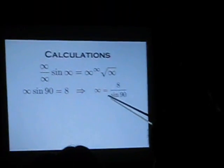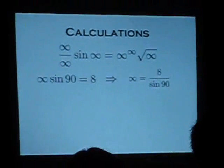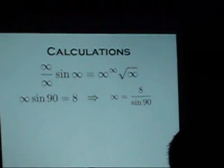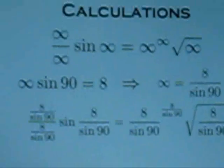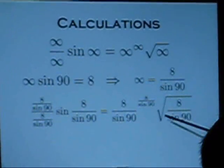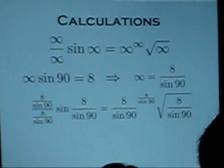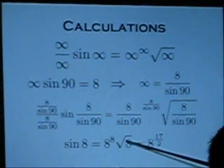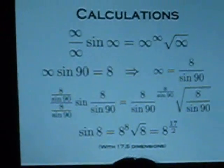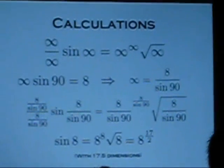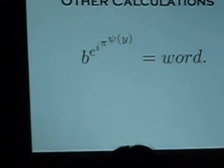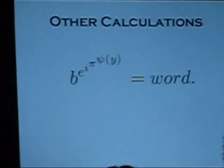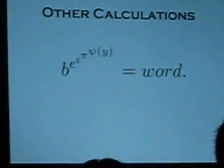So now we have something. Now we have a very nice function to represent these infinities, and we plug it in. And we get this very nice relationship. Notice that we need to use 17.5 dimensions for these functions to work. When you use 17.5 dimensional spacetime, you'll yield some interesting results — one of these being b to the e to the i to the phi to the psi of y equals word.